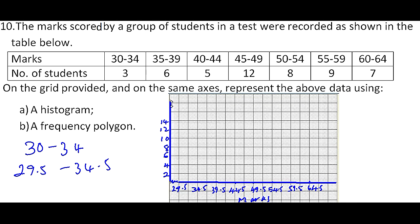So using a ruler you can do that. Now we draw the histogram. From 29.5 to 34.5, and the frequency is 3. So 3 is in between 2 and 4, so that is our histogram.